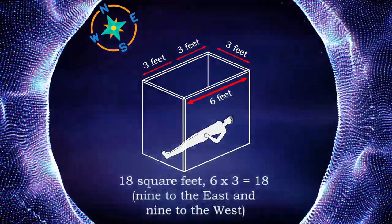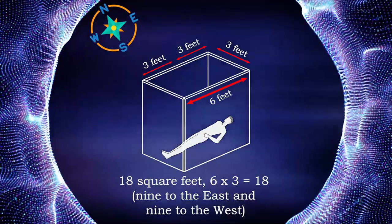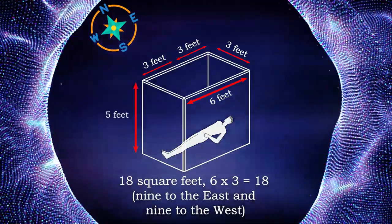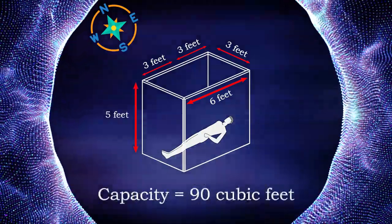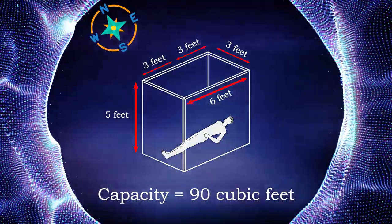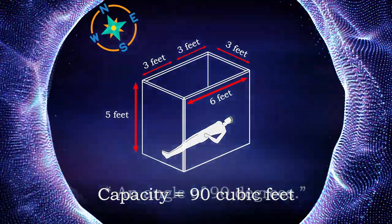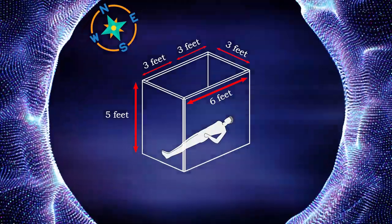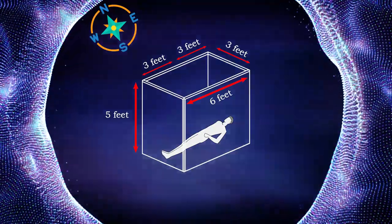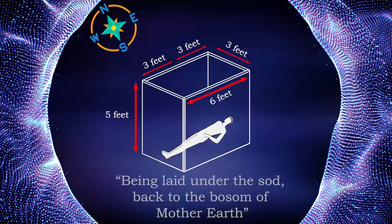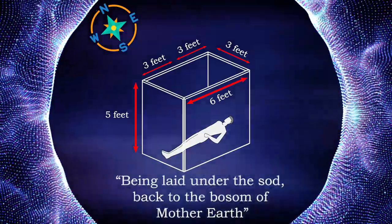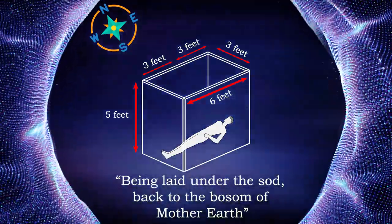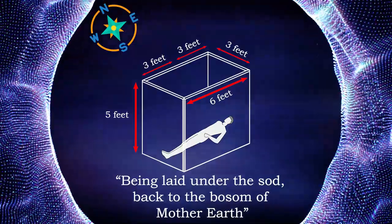As the area was one of 18 square feet, six by three equals 18, nine to the east and nine to the west, and as the depth was a minimum of five feet, the total capacity of the grave was of 90 cubic feet, which is the number by which we define the square, an angle of 90 degrees. The cubic measurement of the grave, therefore, is but another way of representing the square. By being laid under the sod, back to the bosom of Mother Earth, we come into the closest possible fellowship with one another, and the depth of five feet harmonizes with our five points of fellowship.